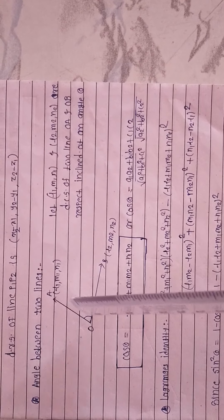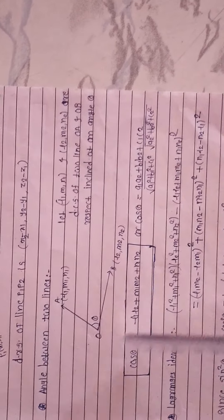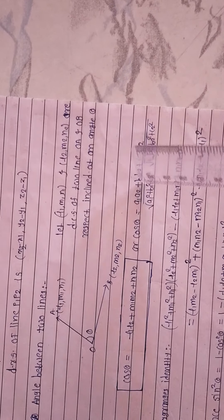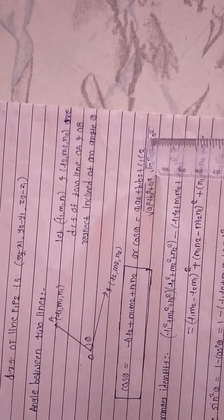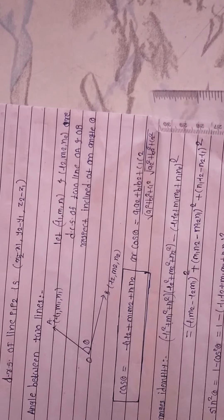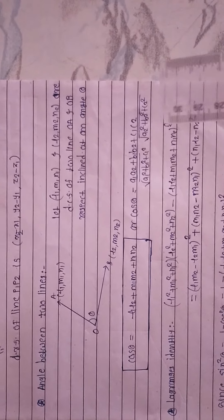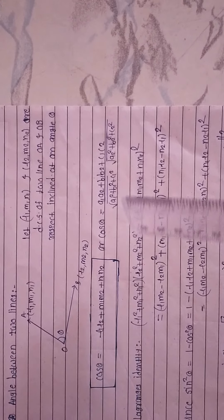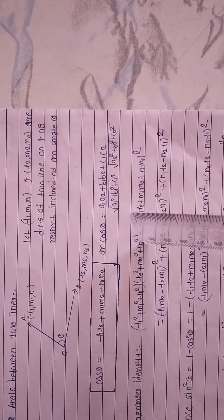Now we will study the angle between two lines when their DCs are known. Suppose we have two lines OA and OB. The DCs of line OA are (l₁, m₁, n₁) and the DCs of line OB are (l₂, m₂, n₂). Then cos θ = l₁l₂ + m₁m₂ + n₁n₂. In terms of direction ratios, cos θ = (a₁a₂ + b₁b₂ + c₁c₂) / [√(a₁² + b₁² + c₁²) · √(a₂² + b₂² + c₂²)]. I am going quickly because these are the preliminary concepts we will need when we study the sphere, cylinder, and cone.